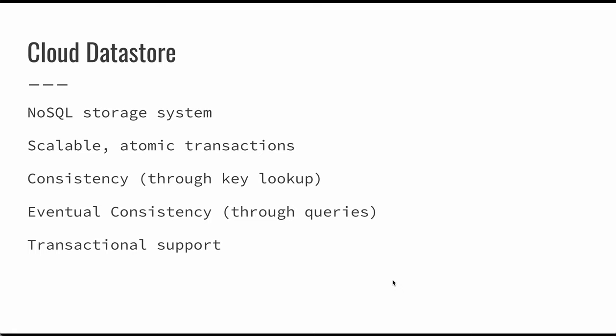Cloud Datastore is a NoSQL storage system. This more or less means that our queries are going to operate a little bit differently. We're not going to have the guarantees of a relational database management system, but it will have a pretty basic API that we're able to use to perform our data storage and our lookups and queries pretty effectively. It does have scalable atomic transactions and we are able to achieve consistency through a key lookup. We're typically going to use a key to look up the different entities that we store. It also has eventual consistency, so once the data has settled and replicated appropriately, we should have consistency in our stored data. It does support transactions, so you can do multiple updates and commit those as a single transaction.